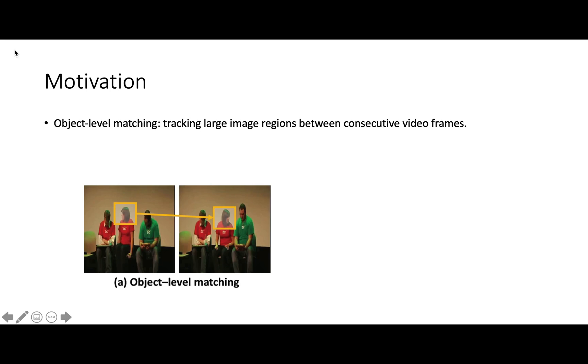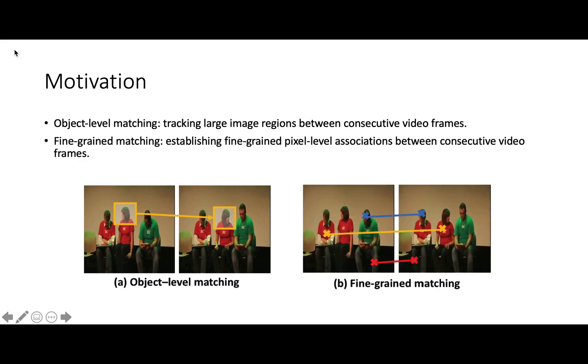Object level matching, which locates a local image region randomly cropped from a reference frame at another nearby frame, and fine-grain matching, which establishes pixel-level associations between these two video frames.